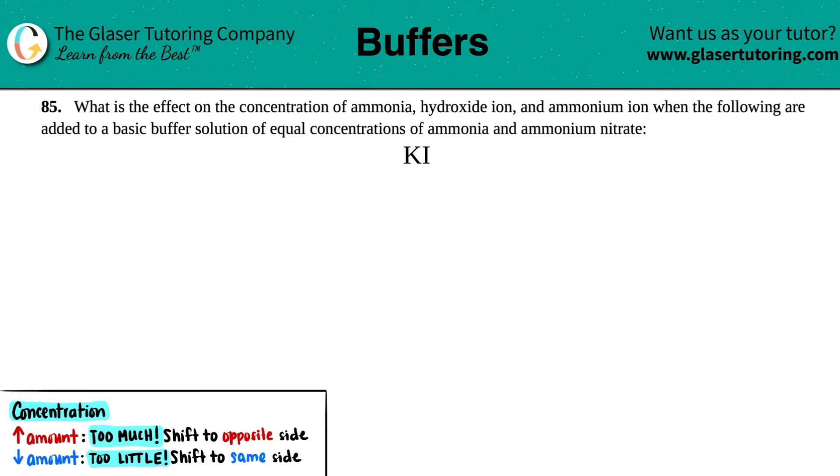Number 85. What is the effect on the concentration of ammonia, hydroxide ion, and ammonium ion when the following are added to a basic buffer solution of equal concentrations of ammonia and ammonium nitrate? So in this case, we're adding potassium iodide to a buffer solution that contains ammonia and ammonium nitrate, and we have to figure out what the effect of these three guys are.